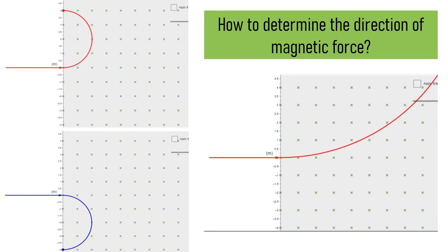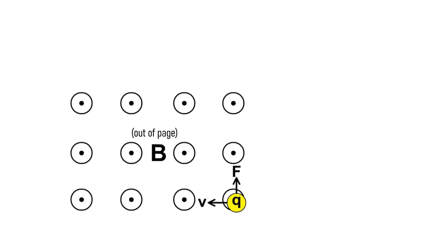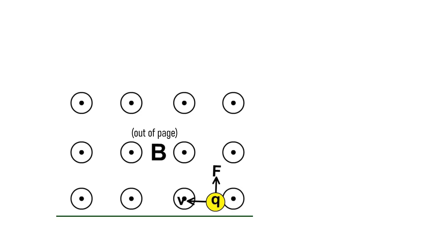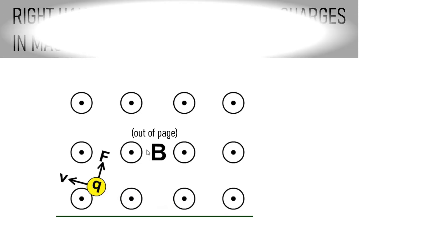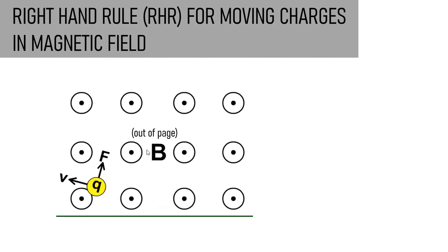The question is: can we predict the direction of the deflection? Can we know the direction of the magnetic force acting on the charged particle? It's important to know that the magnetic force acting on the charged particle is 90 degrees to the velocity of the particle. As shown in the diagram, if the particle is heading in one direction, the force is 90 degrees to its velocity. We can predict the direction of the magnetic force, velocity, or magnetic field by using a rule known as the right-hand rule for moving charges in a magnetic field.